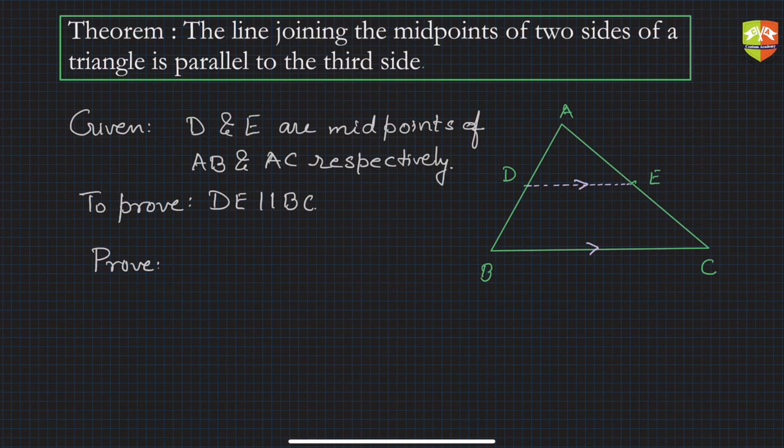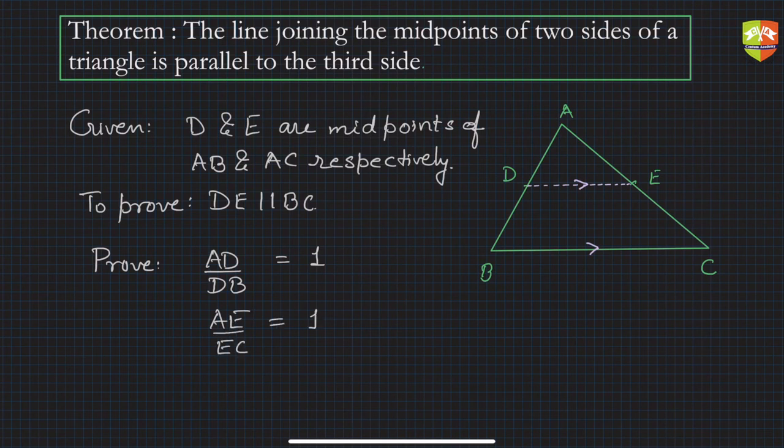What is AD? D is the midpoint, so you can say AD/DB = 1 because D is the midpoint. Similarly AE/EC = 1 because of the midpoint. Therefore you can say AD/DB = AE/EC.